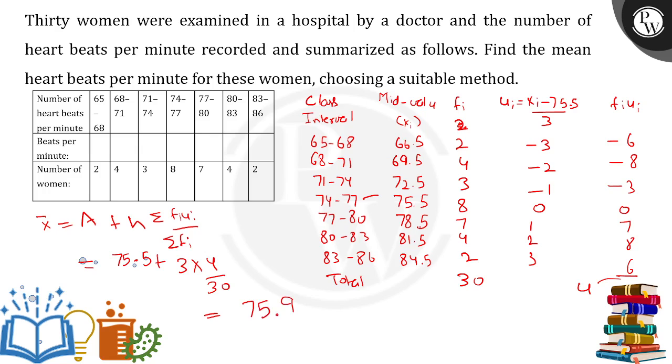The mean heartbeat per second for these women. All these women, the mean heartbeat will be 75.9. Understanding this part is important. Divide by 3, again 75.5, and the rest of the method is as usual.